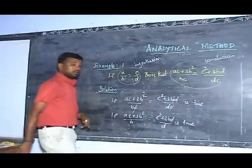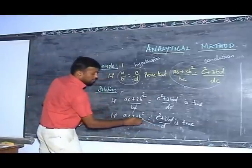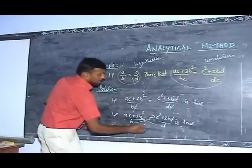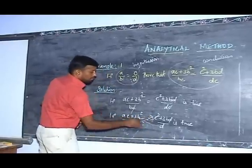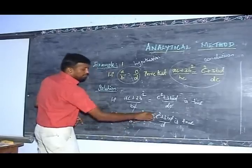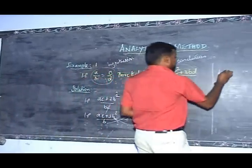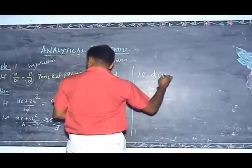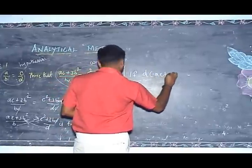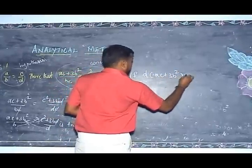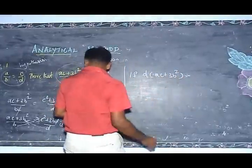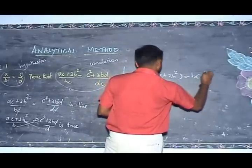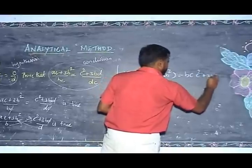Now I cross multiply the terms. I multiply the terms by D on both sides. Therefore, if D times AC plus 3B squared is equal to B times C squared plus 3BD.